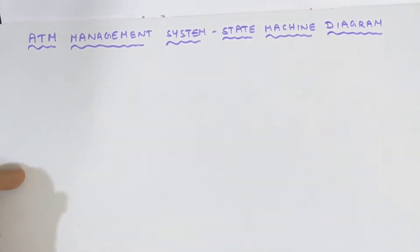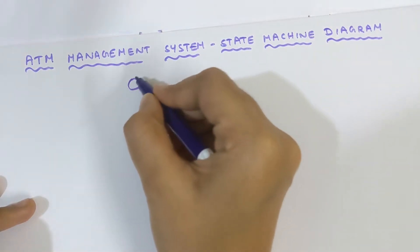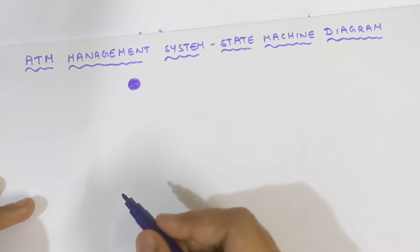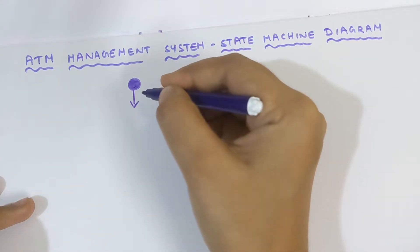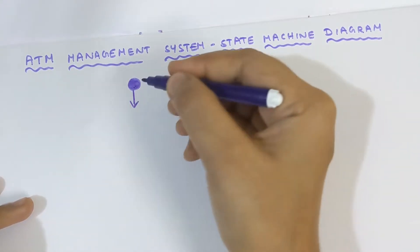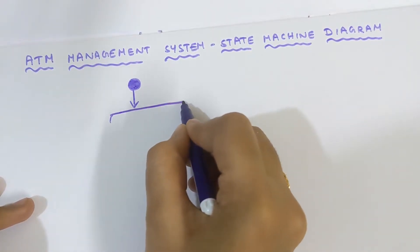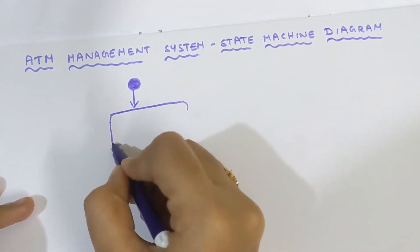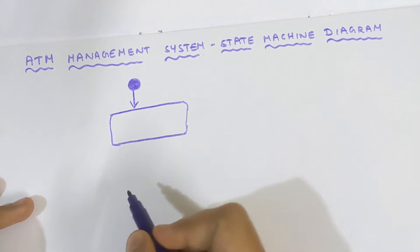So, ATM management system. The first step in drawing the state machine diagram is to put a circle with a bubble inside — this is known as the start symbol. The first thing in any state machine diagram should always be the start symbol. After that, put a downward arrow. Next, draw the state symbol, which is a rectangle with rounded corners.